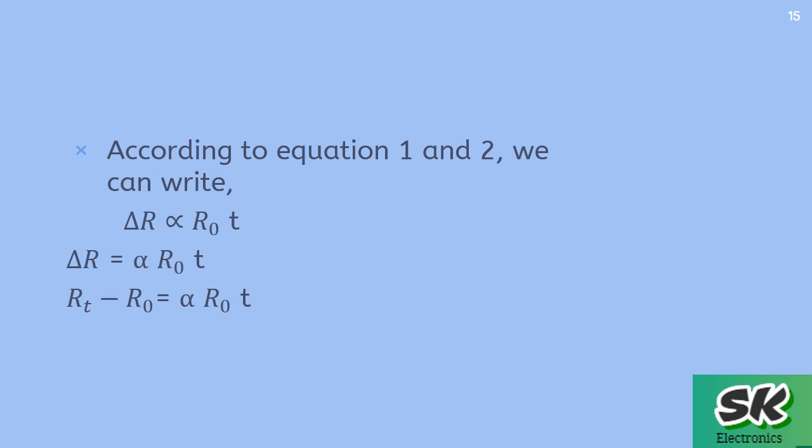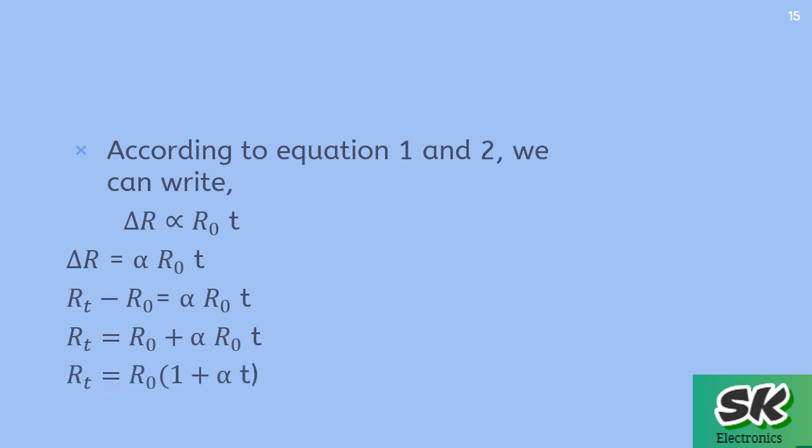Rearranging to find the final resistance: Rt equals R₀ plus alpha × R₀ × t. Taking R₀ as common, the equation becomes Rt equals R₀ times (1 + alpha × t). From this equation we can also solve for the value of alpha.